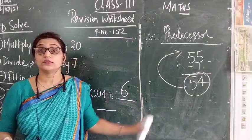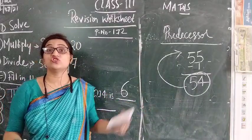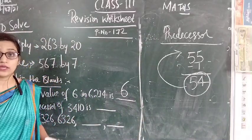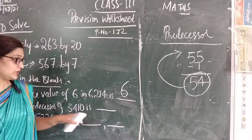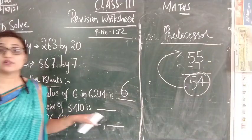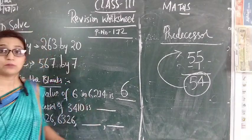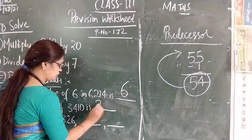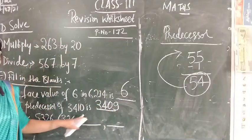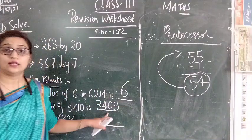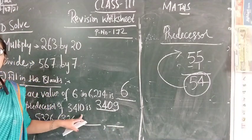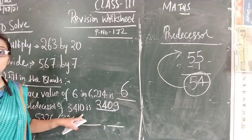Or we can say that the number that comes just before the given number, that is called predecessor. In the question it is given 3410. Its predecessor we have to write. So we just subtract 1 from this number. So 3409 is the predecessor of 3410.